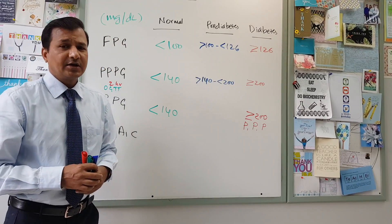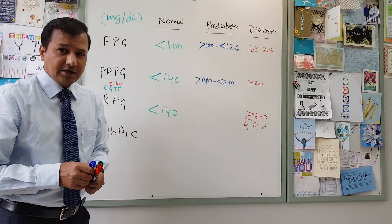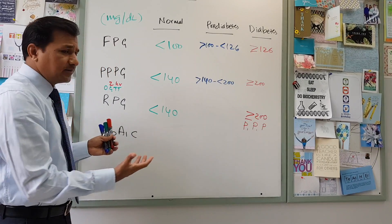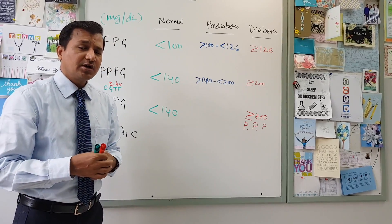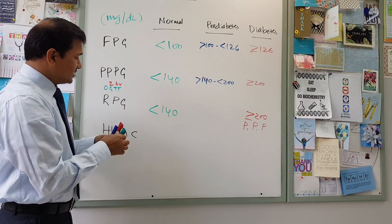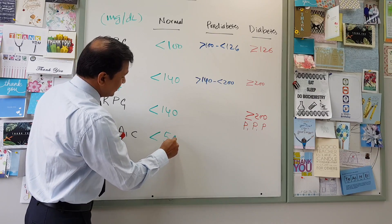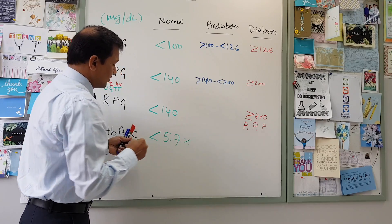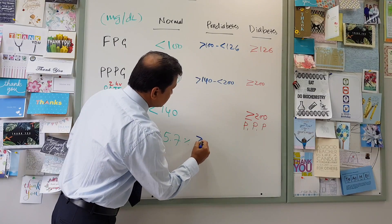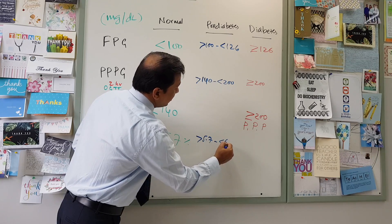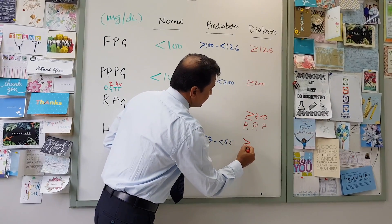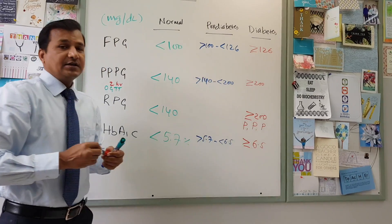Now, HbA1c — glycated hemoglobin. It measures the average blood glucose level over 4 to 6 weeks because red blood cells survive for 120 days, so HbA1c is used for long-term measurement of glucose. Normally, HbA1c should be less than 5.7%. If it is between 5.7% and less than 6.5%, that is considered the pre-diabetes range. If it is equal to or greater than 6.5%, that is diabetes mellitus.